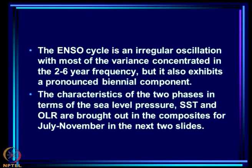We continue our discussion about the El Niño Southern Oscillation today. The El Niño Southern Oscillation cycle is an irregular oscillation with most of the variance concentrated in the 2 to 6 year frequency, but it also exhibits a pronounced biennial component, that is to say year-to-year variation.